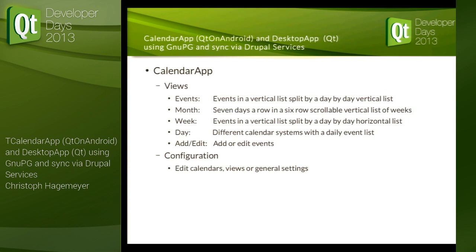The calendar app has four views and an add or edit event page. There's an events view where you can flick vertically and the events are listed day by day. The second view is a month view, also vertically flickable, and you have seven days in a row for a week, with weeks listed in a vertical list.